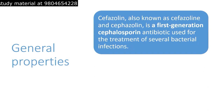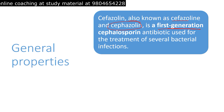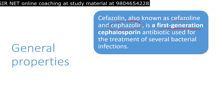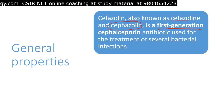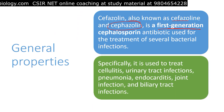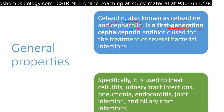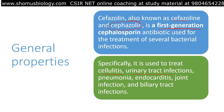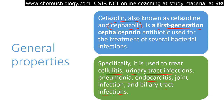Cefazolin, also known as cephazolin, is a first-generation cephalosporin antibiotic used for the treatment of several types of bacterial infections. While third-generation cephalosporins are more commonly used today as broad-spectrum beta-lactam cell wall synthesis inhibitors, cefazolin is still needed in some cases. It is used to treat cellulitis, urinary tract infections, pneumonia, endocarditis, joint infections, and biliary tract infections.